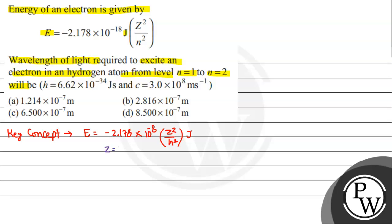So Z equals 1, and the first level is n1=1 and the higher level is n2=2. The energy difference ΔE = E1 - E2, and this equals